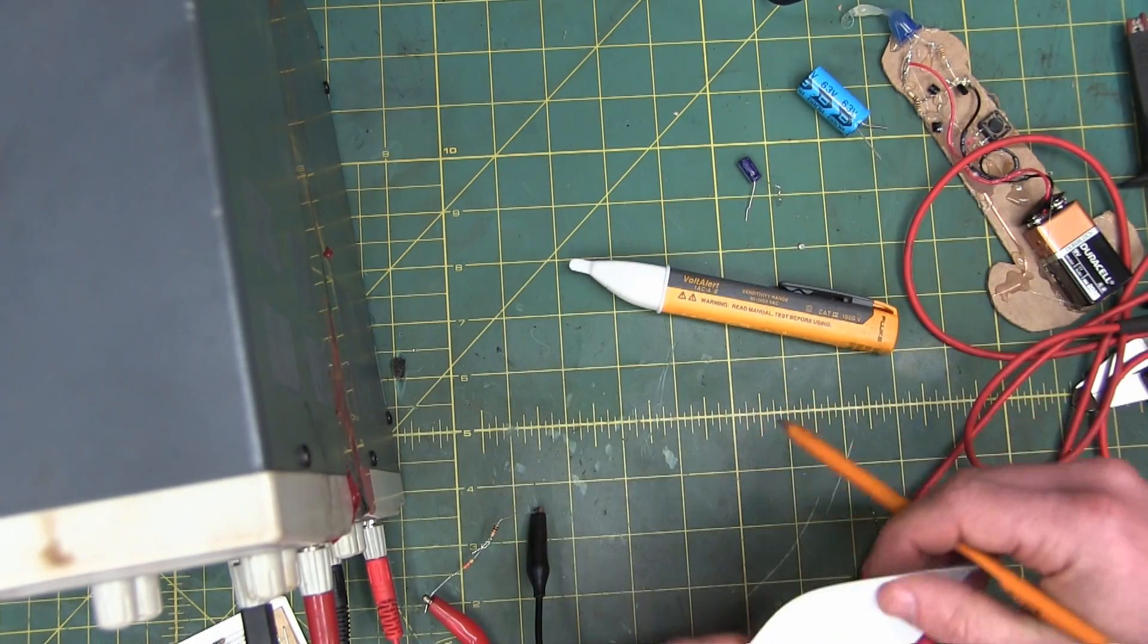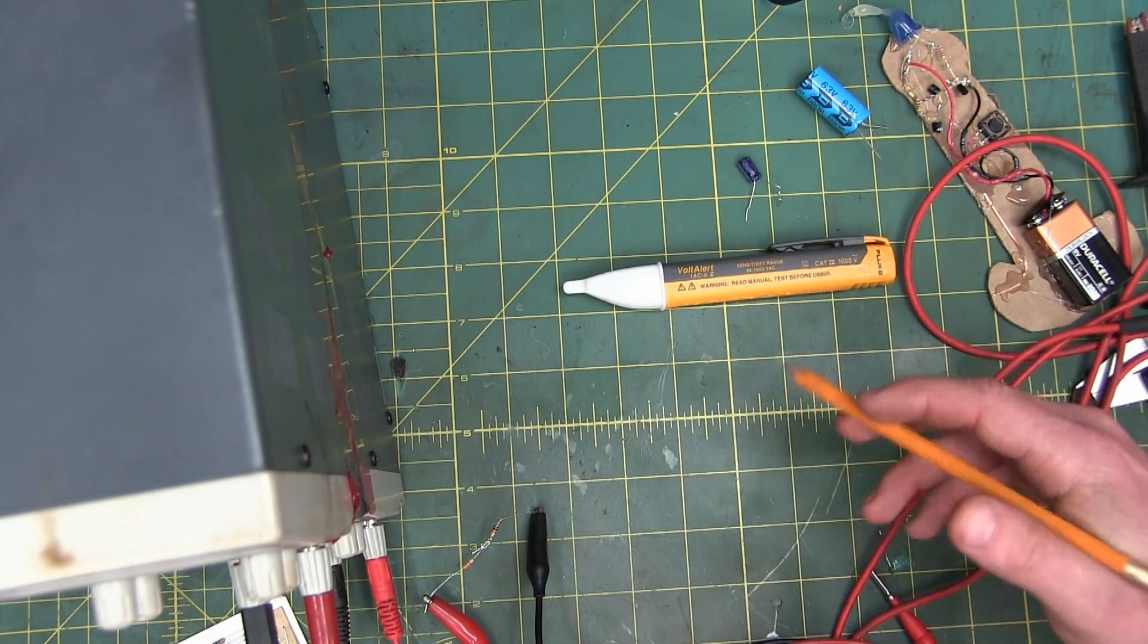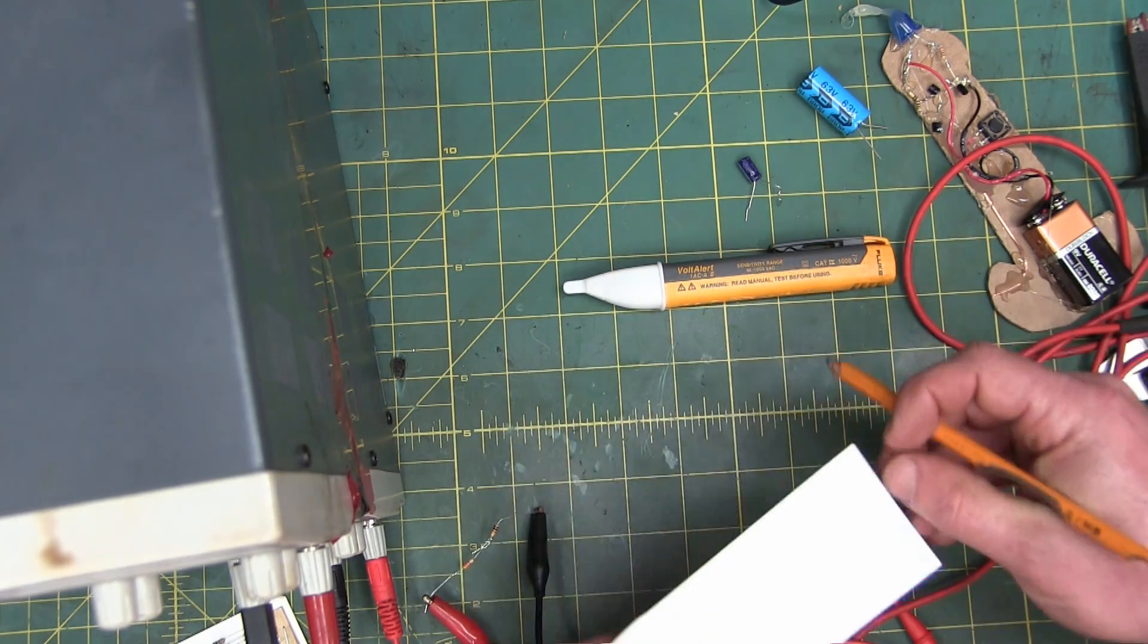How many electricians does it take to install a light bulb? It's just the one, but two weeks to bring it up to code.